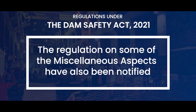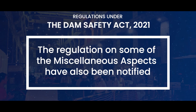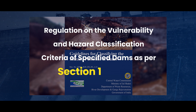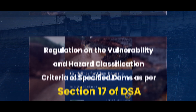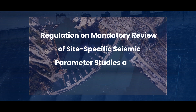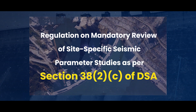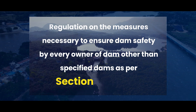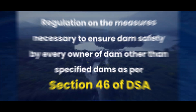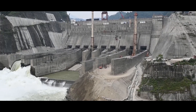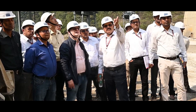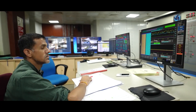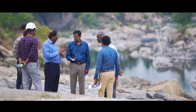Regulations on miscellaneous aspects have also been notified. These include vulnerability and hazard classification criteria of specified dams, mandatory review of site-specific seismic parameter studies and measures necessary to ensure dam safety by every owner of dam other than specified dams. These regulations provide specific steps for enforcement and compliance of the provisions of the Dam Safety Act and carry the force of law and must be followed just like the main statute.